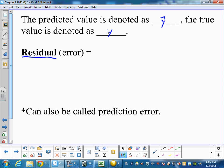So when I want to find the residual or the error, sometimes called prediction error, I take my actual value and subtract it from the predicted value.